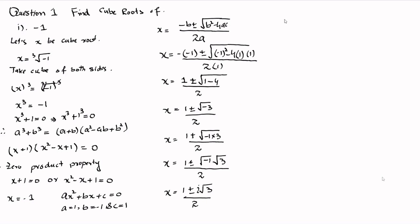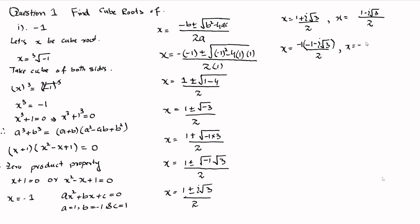So we can write x equals 1 plus iota root 3 divided by 2, and x equals 1 minus iota root 3 divided by 2. Taking minus 1 common from each numerator, we get x equals minus 1 minus iota root 3 divided by 2, and x equals minus 1 plus iota root 3 divided by 2.